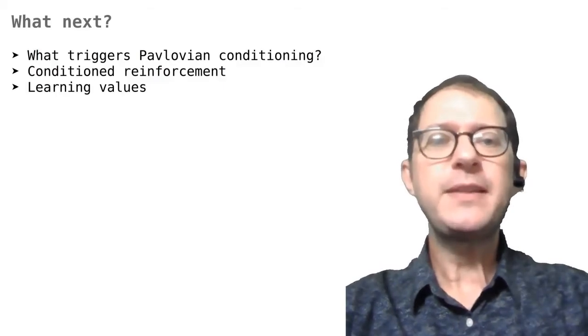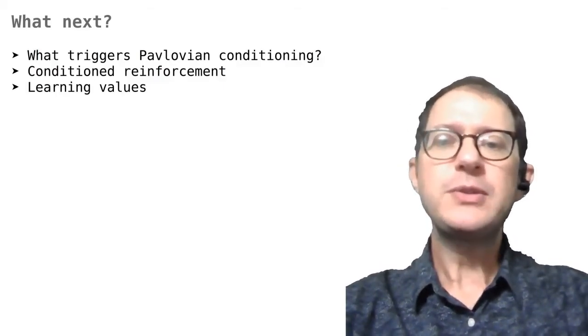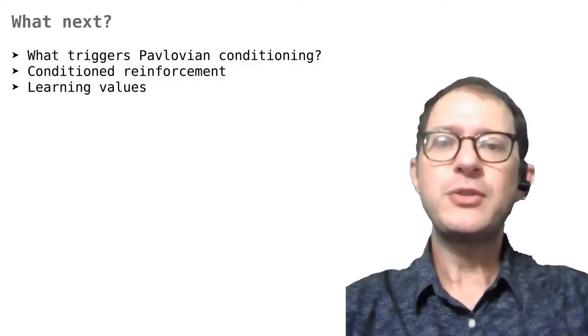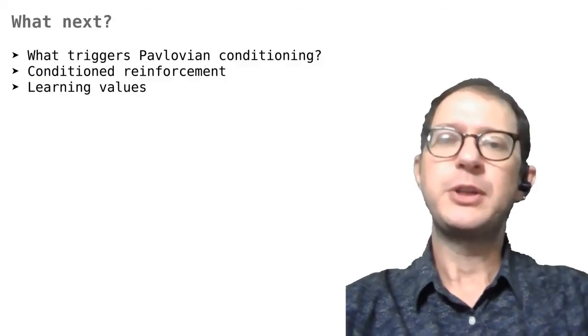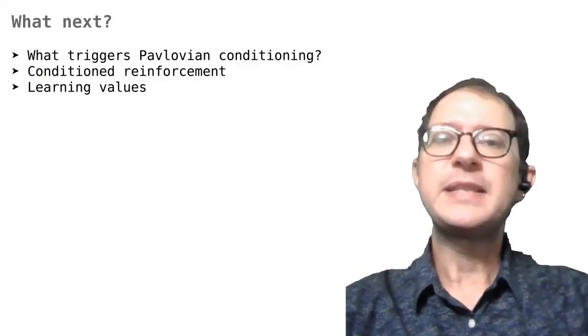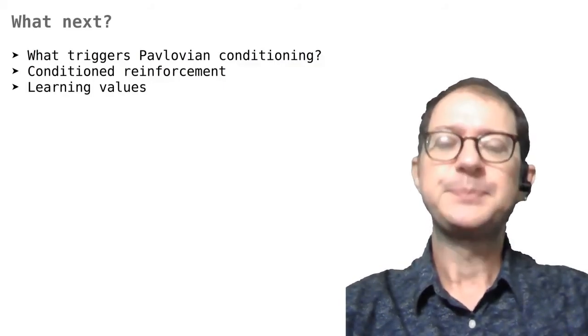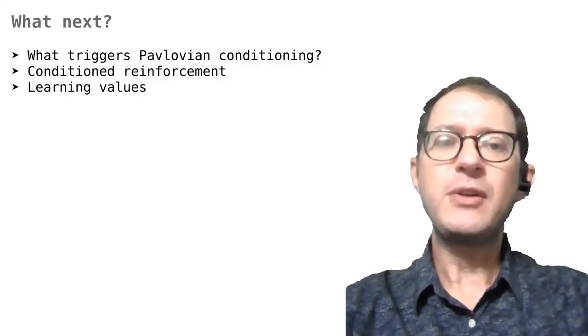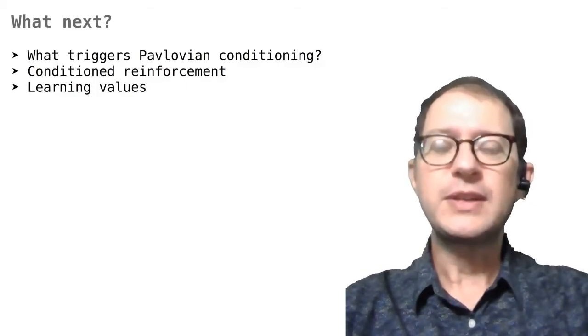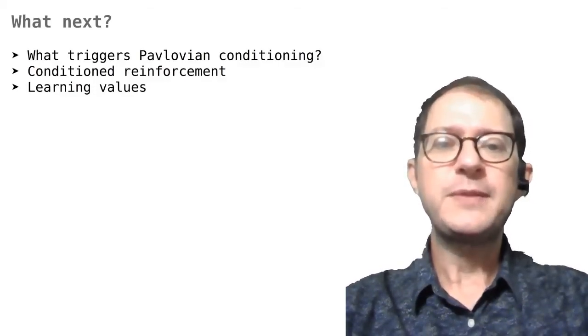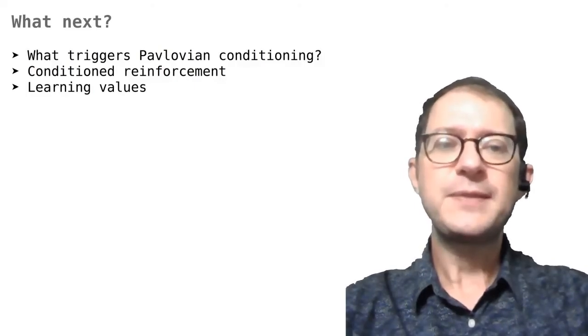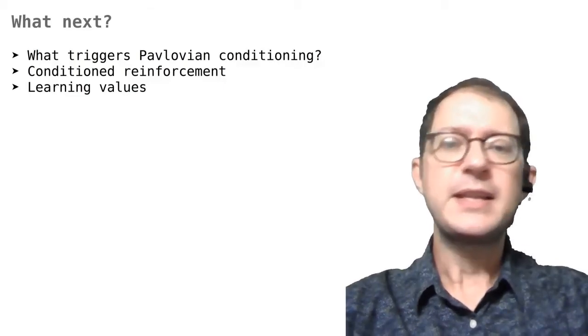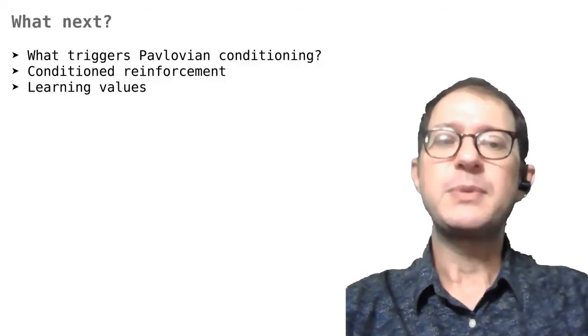In conclusion, we have seen that we can use the Rescorla-Wagner learning rule also in instrumental conditioning. We only need to add one detail, that instrumental actions need to be chosen by the animal in order to be learned about. You cannot discover that lever pressing gives food if you never try to press the lever. One consequence of this is that the associative strength for an instrumental response can grow only when the response is tried out. In contrast, in Pavlovian conditioning we have seen that the Rescorla-Wagner model says that the associative strength between CS and US grows every time the CS and US are presented. It does not matter whether the animal makes a conditional response or not.